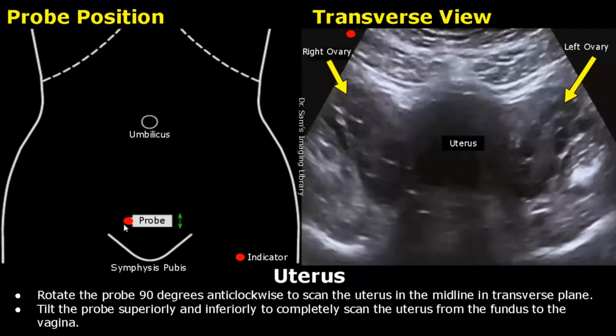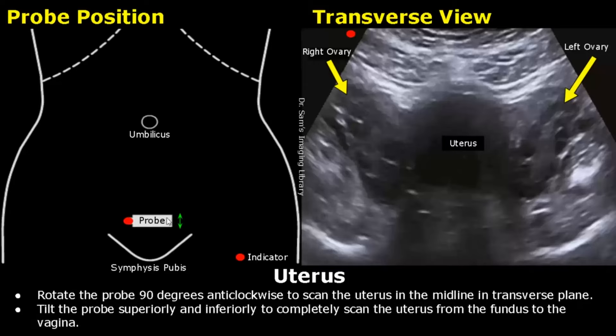Next, we will scan the uterus in transverse view. Place the probe in the midline and rotate it 90 degrees anti-clockwise to keep it in transverse orientation. Tilt it superiorly and inferiorly to completely scan the uterus from the fundus to the vagina. We can see the uterus in the middle and also the right and left ovaries on the sides.